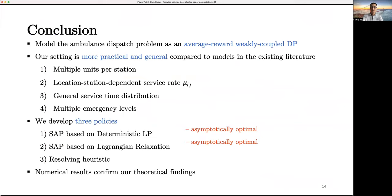As a final conclusion, in this work, we model the ambulance dispatch problem as an average-reward weakly-coupled DP, and our model is practical and general in many aspects. We developed two asymptotically optimal policies called SAP, and the resolving heuristic based on SAP that performs better. Numerical results using real data confirm our theoretical findings. Thank you.